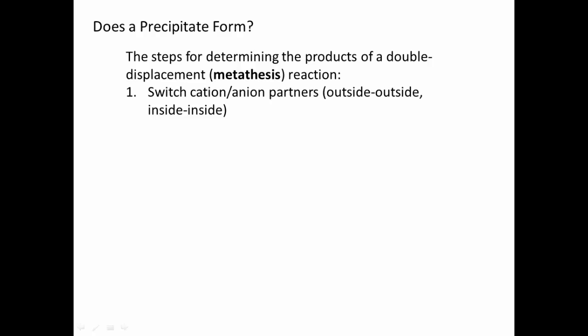So how do you know if a precipitate forms? What we have right here is whenever you have a precipitation reaction, you are looking for the products of a double displacement reaction or a metathesis reaction. So the first thing you have to do is switch the cation and anion partners. We're going to look at this equation again of the reaction that we saw that formed the orange colored solid.